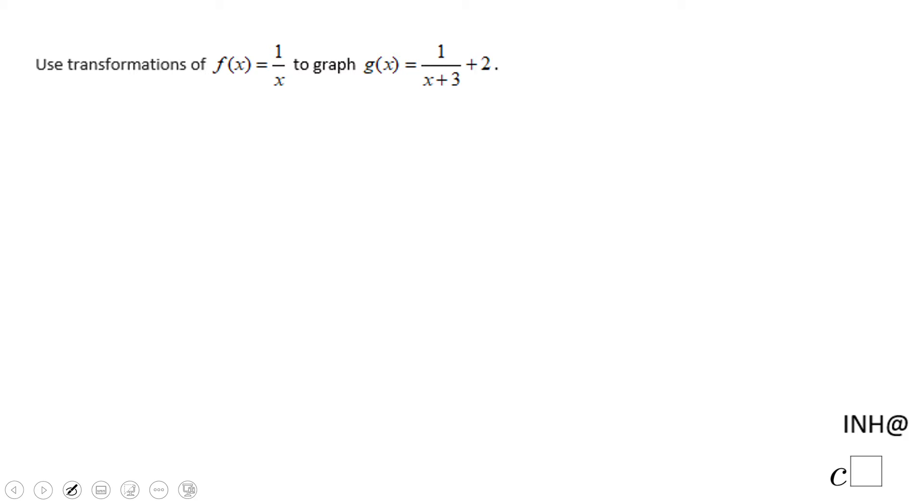Welcome or welcome back. I need help at C squared. In this example, we need to use transformation of the parent graph 1 over x, the reciprocal function, to graph this function g of x.